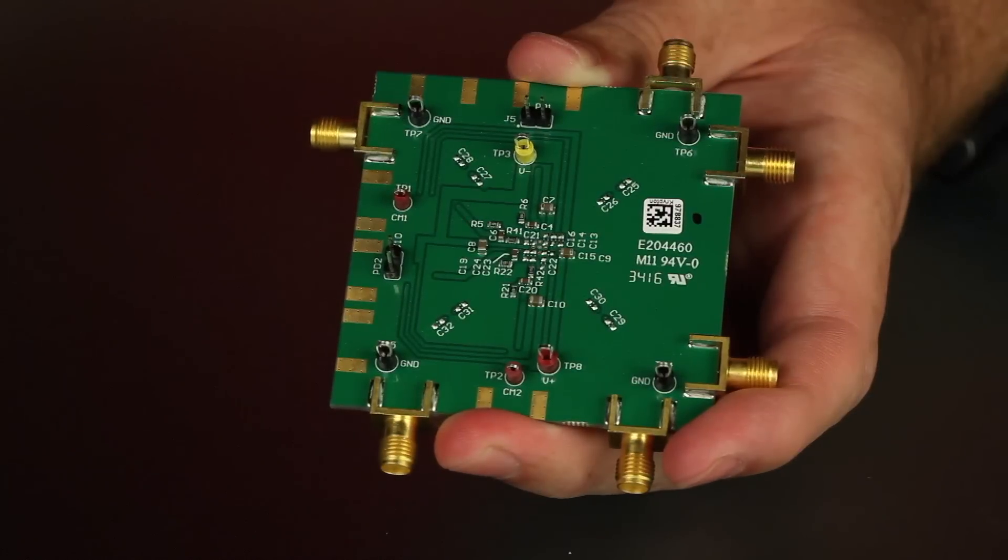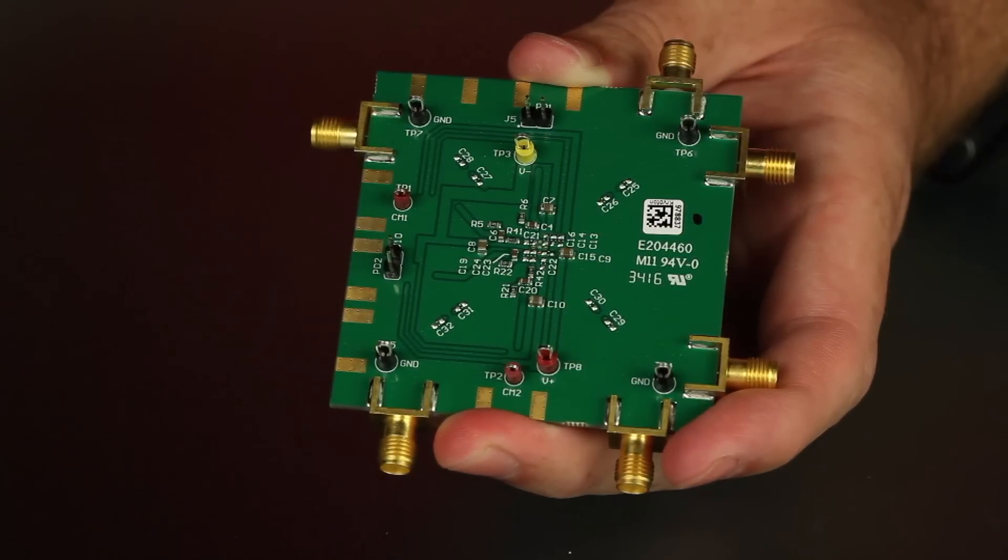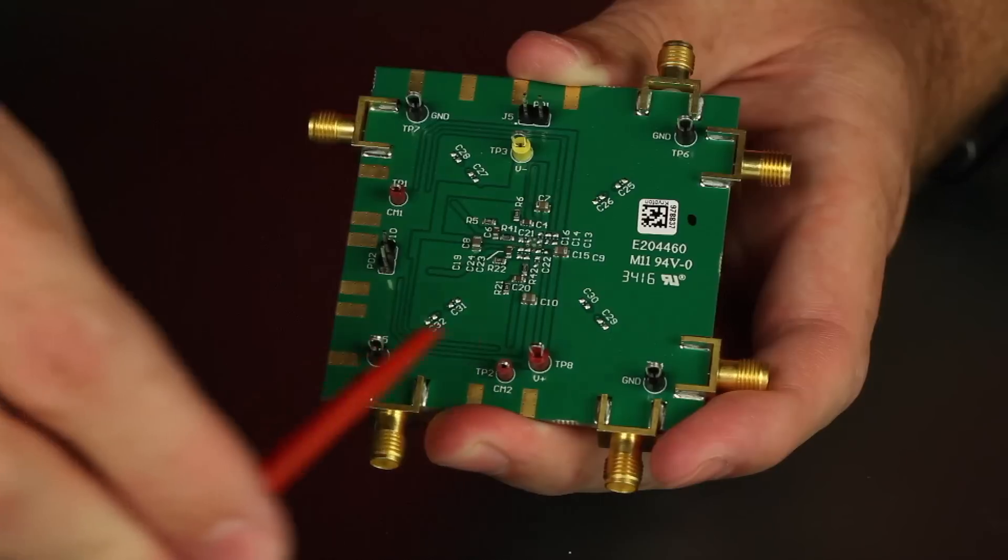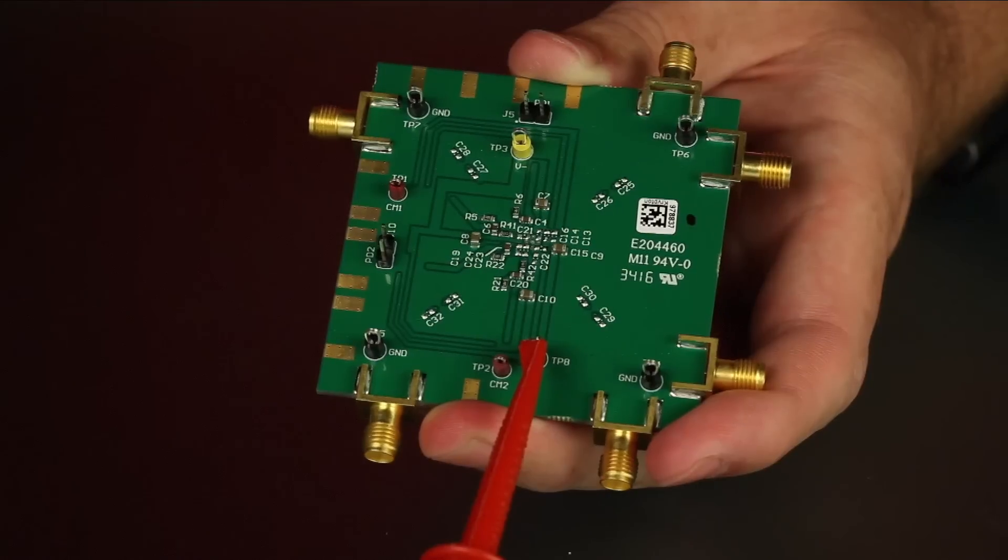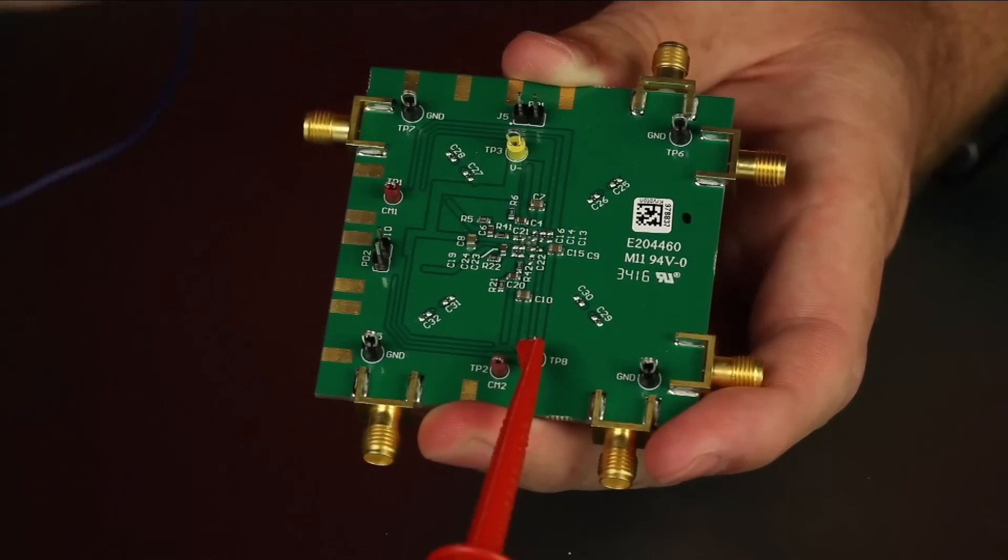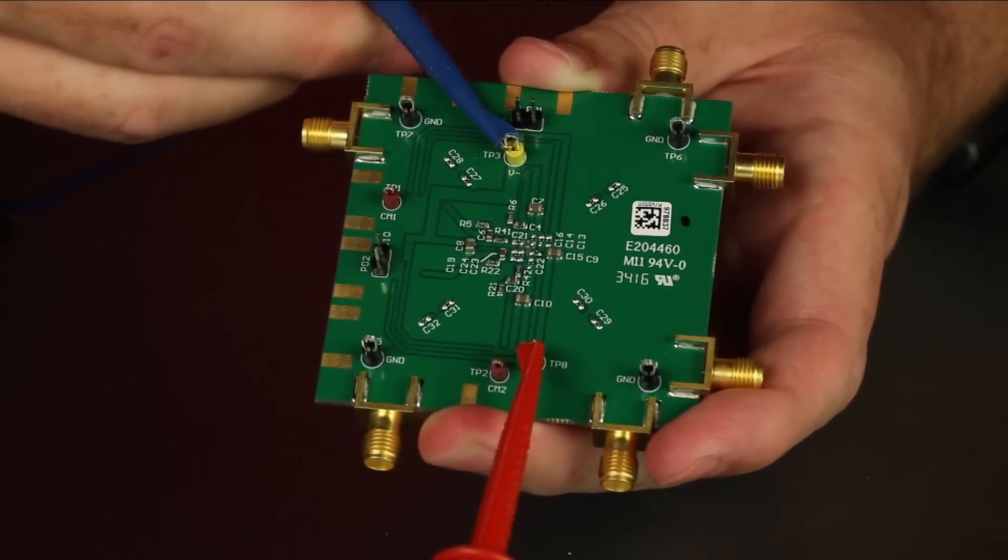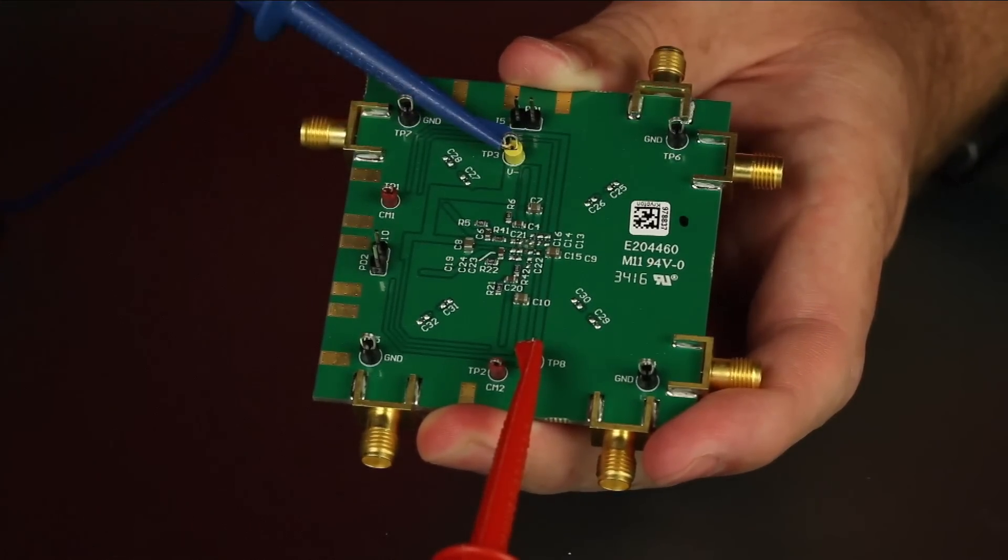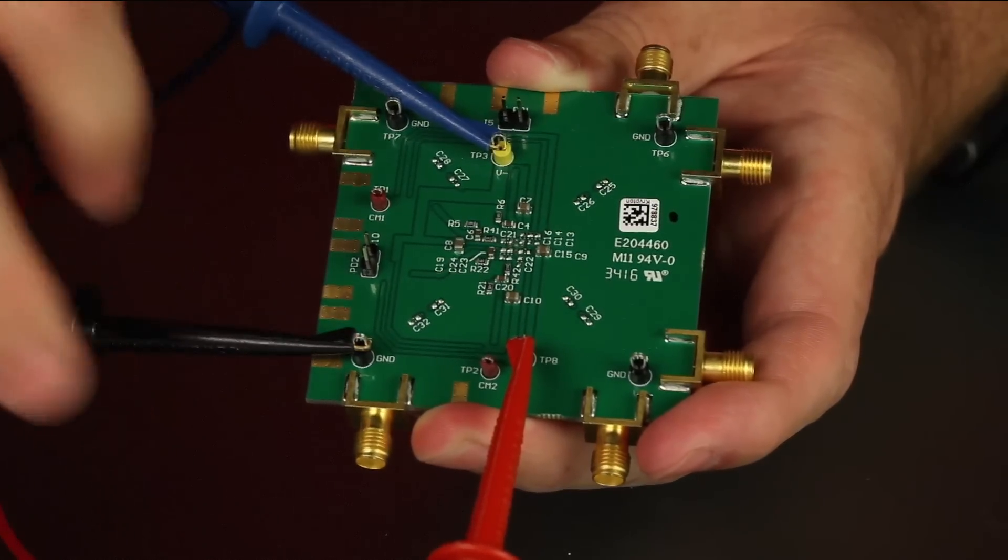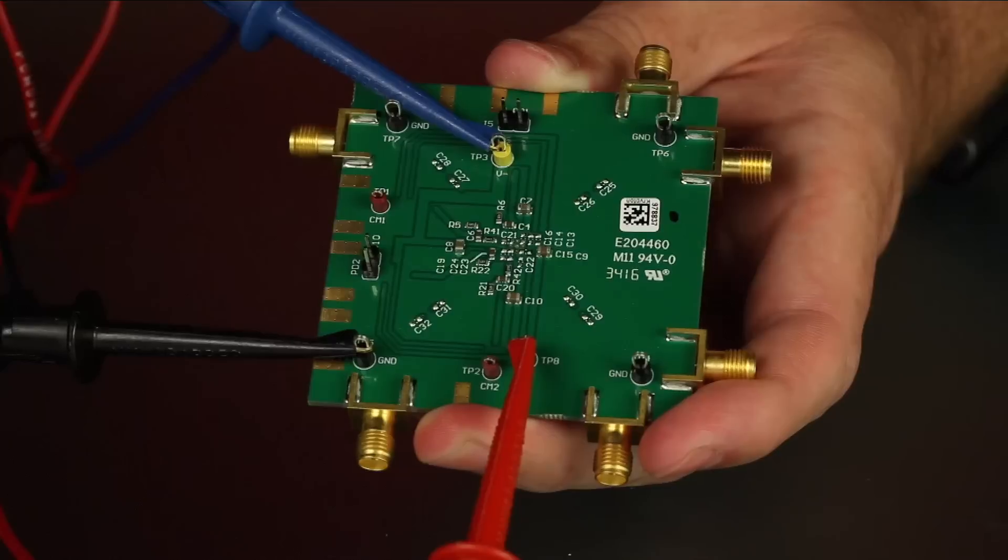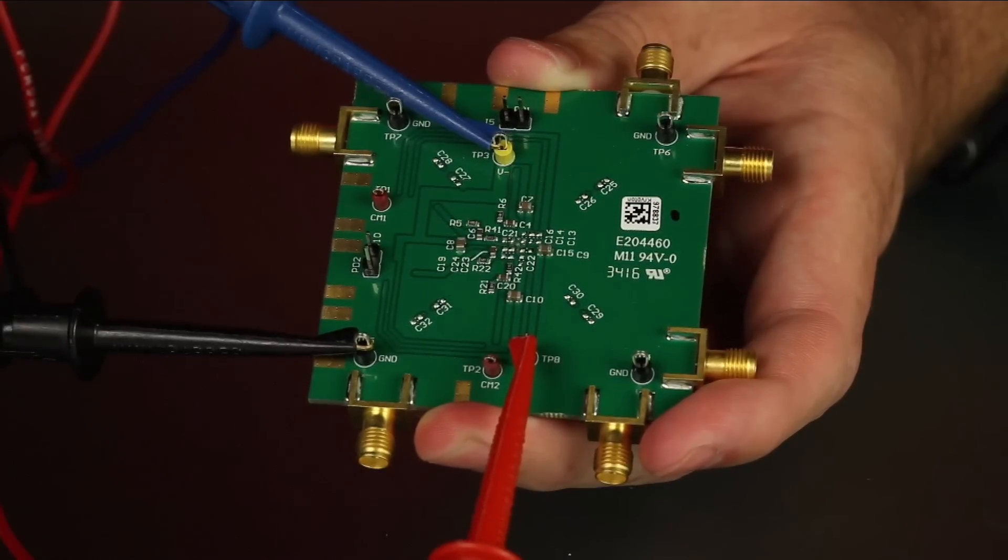The board may be configured for either split supply operation or for single supply operation. For split supply operation, connect the positive supply voltage to the red VS plus connector, then connect the negative supply voltage to the yellow VS minus connector, and the ground reference to one of the black ground connectors. For single supply operation, the VS minus connector and the ground connector should be connected to ground.